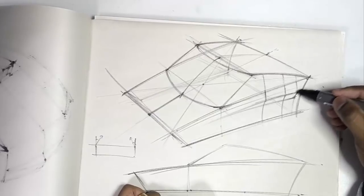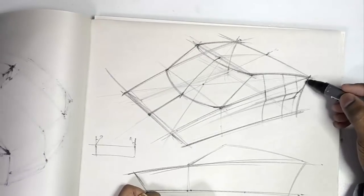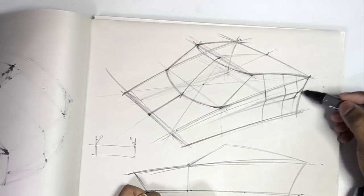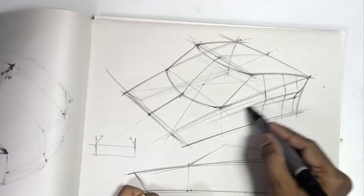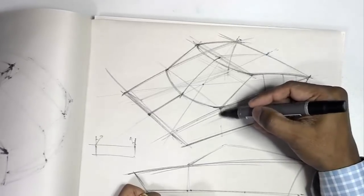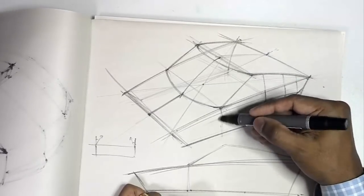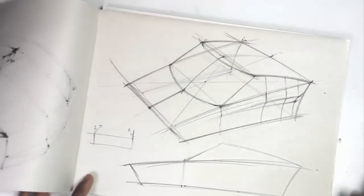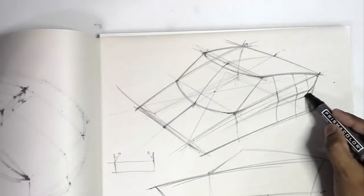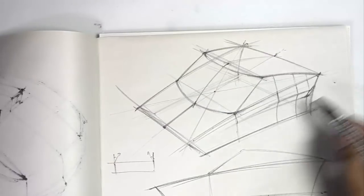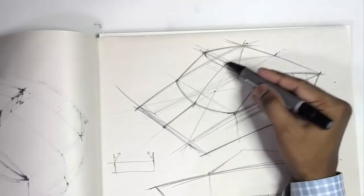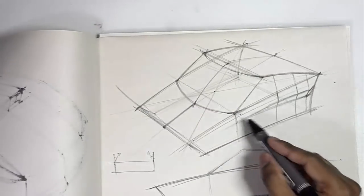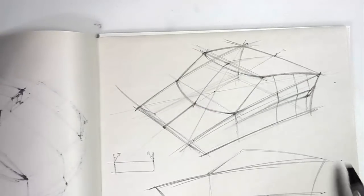And then this sort of returns back here. So all you're doing is just building the section, building the section, section by section. And that's how you sort of train your brain to understand these forms.